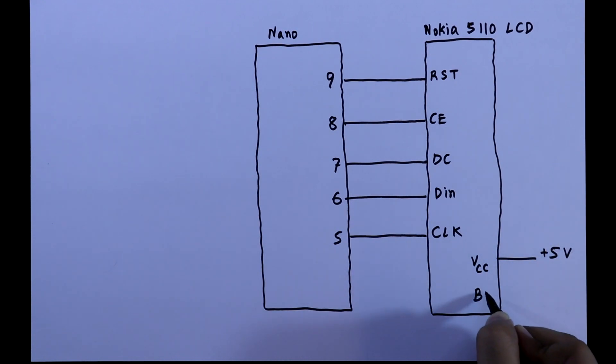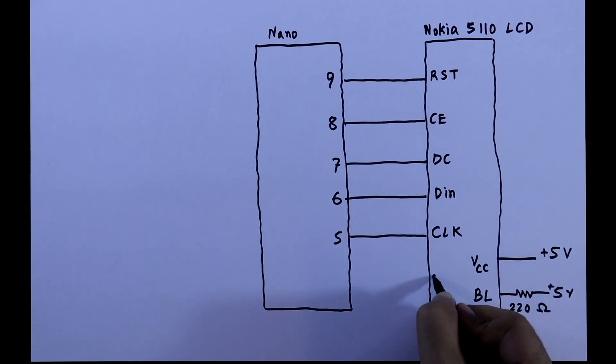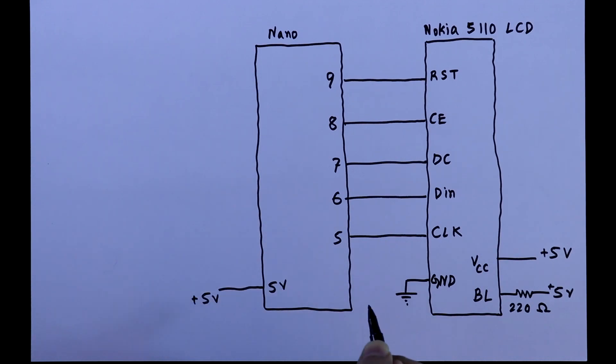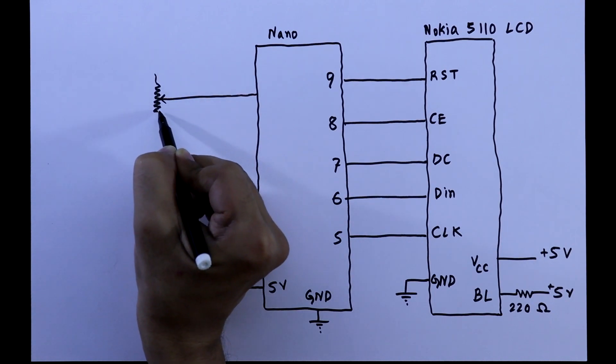The backlight is connected to 5 volts through a 220 ohms resistor and the ground is connected to ground. The 5 volt is connected to the 5 volt pin and ground pin to the ground. To control the Pong game we need two potentiometers.